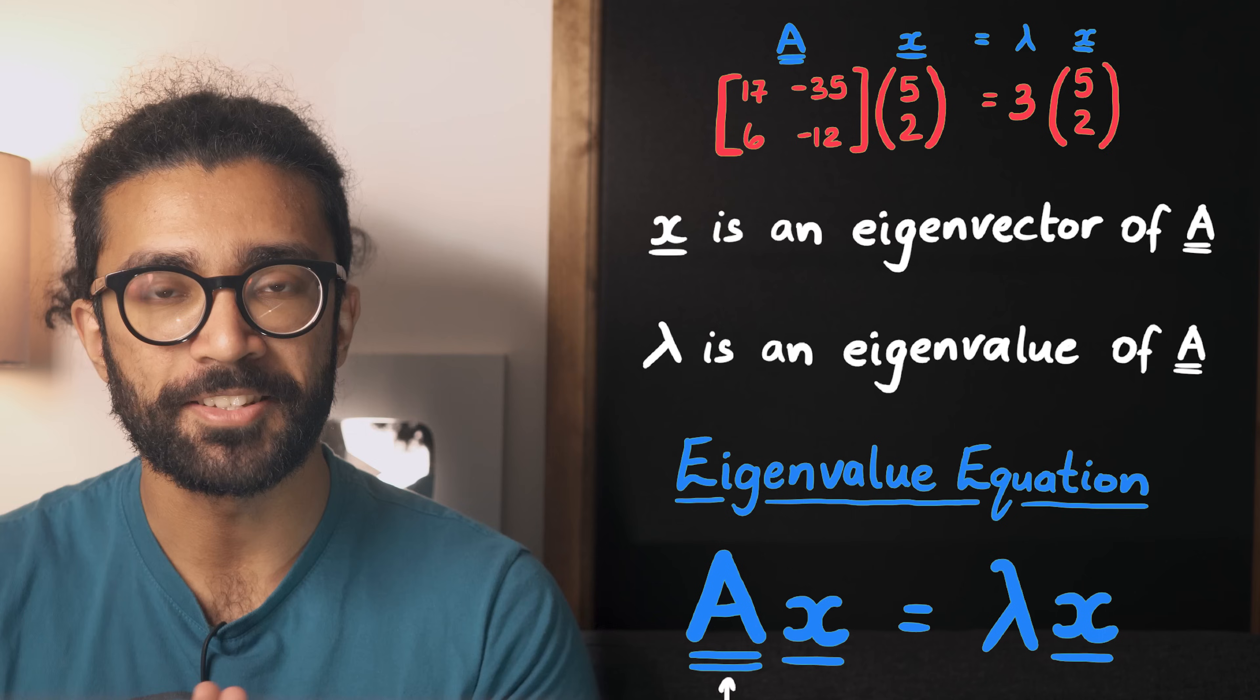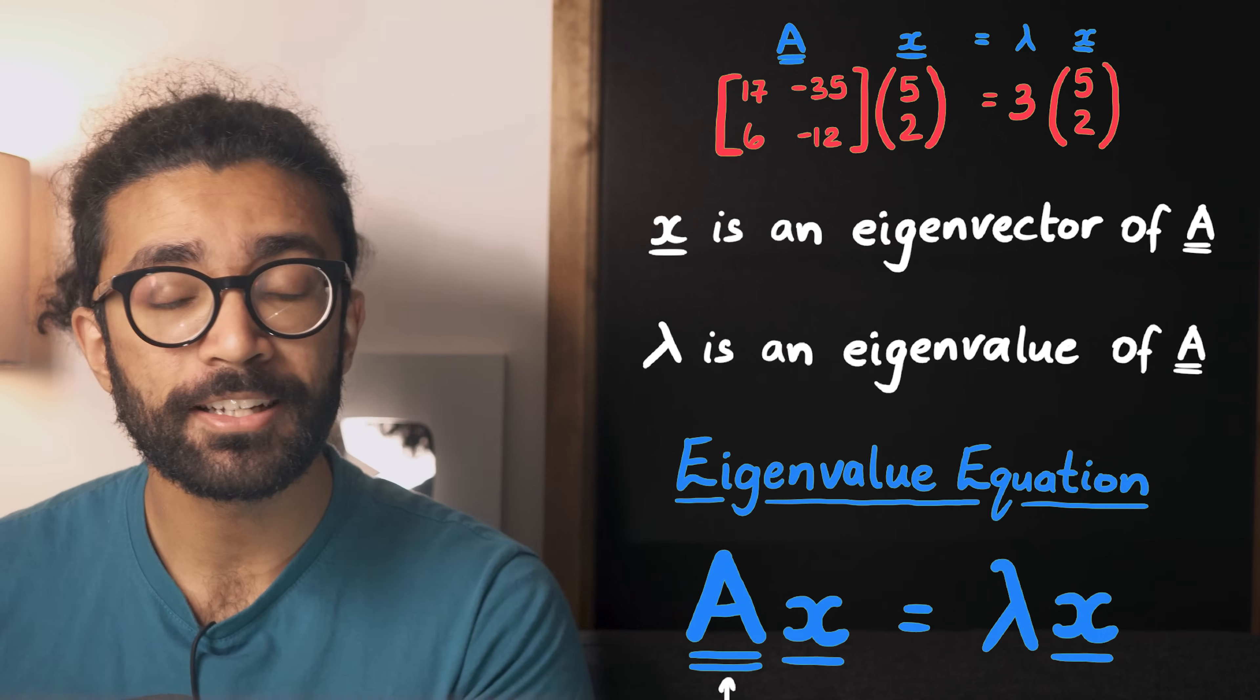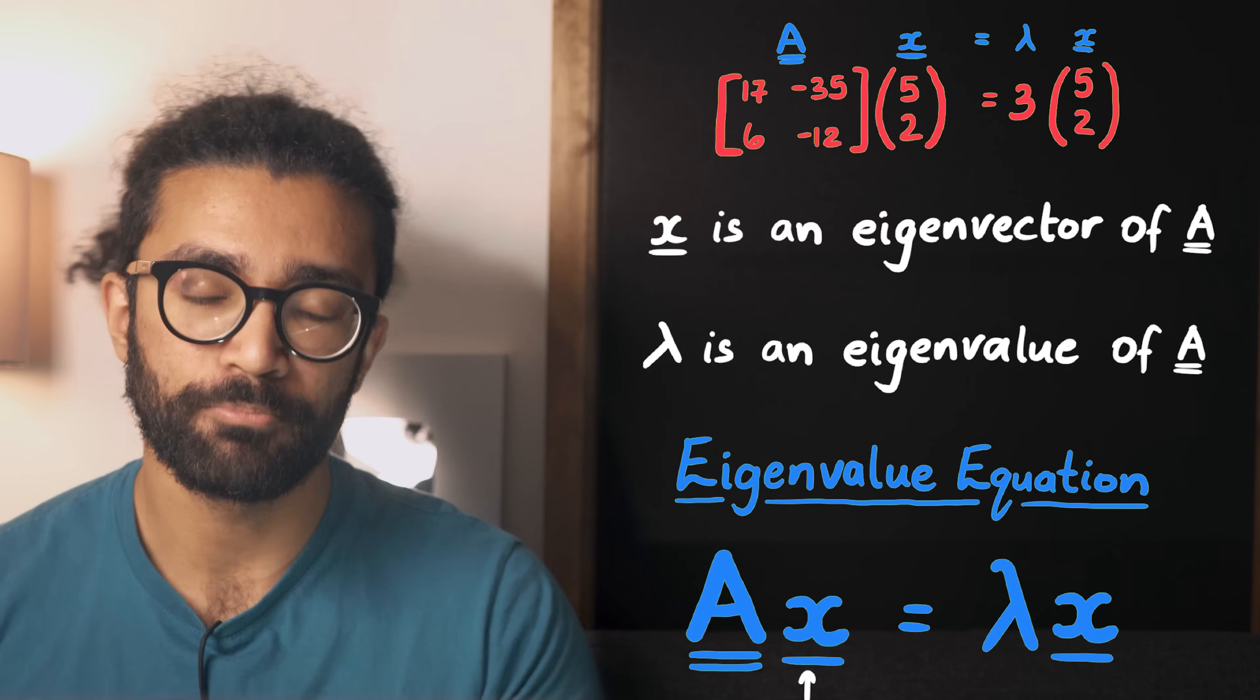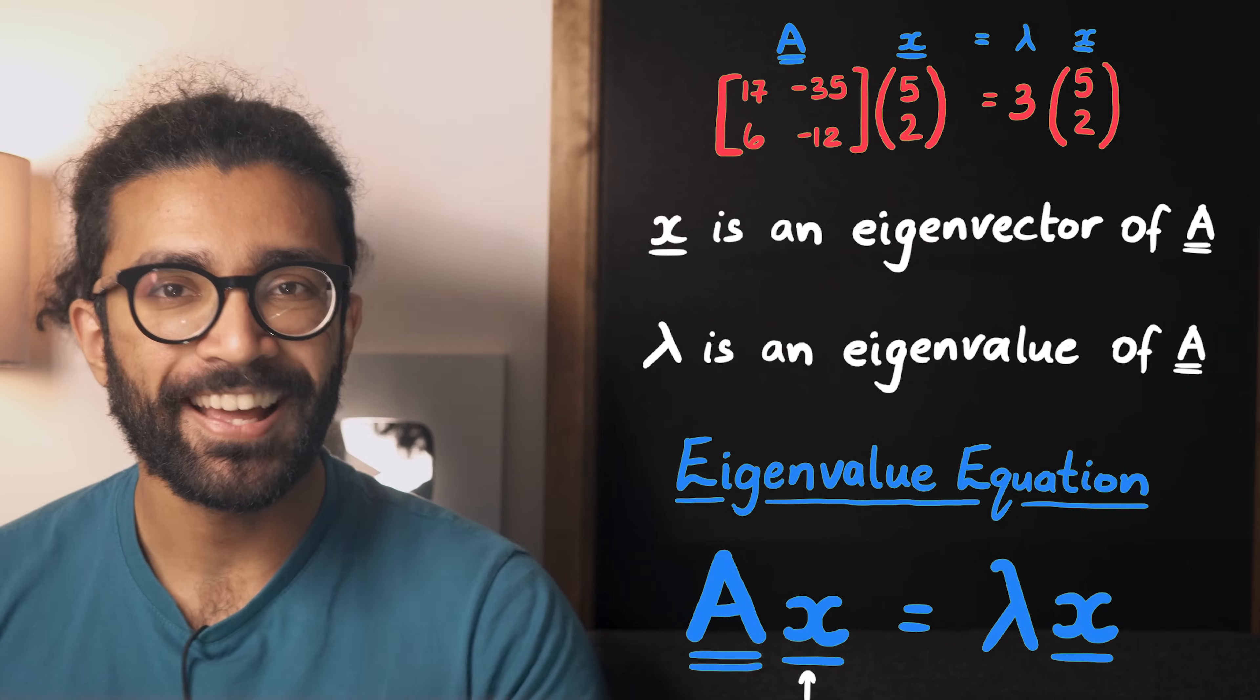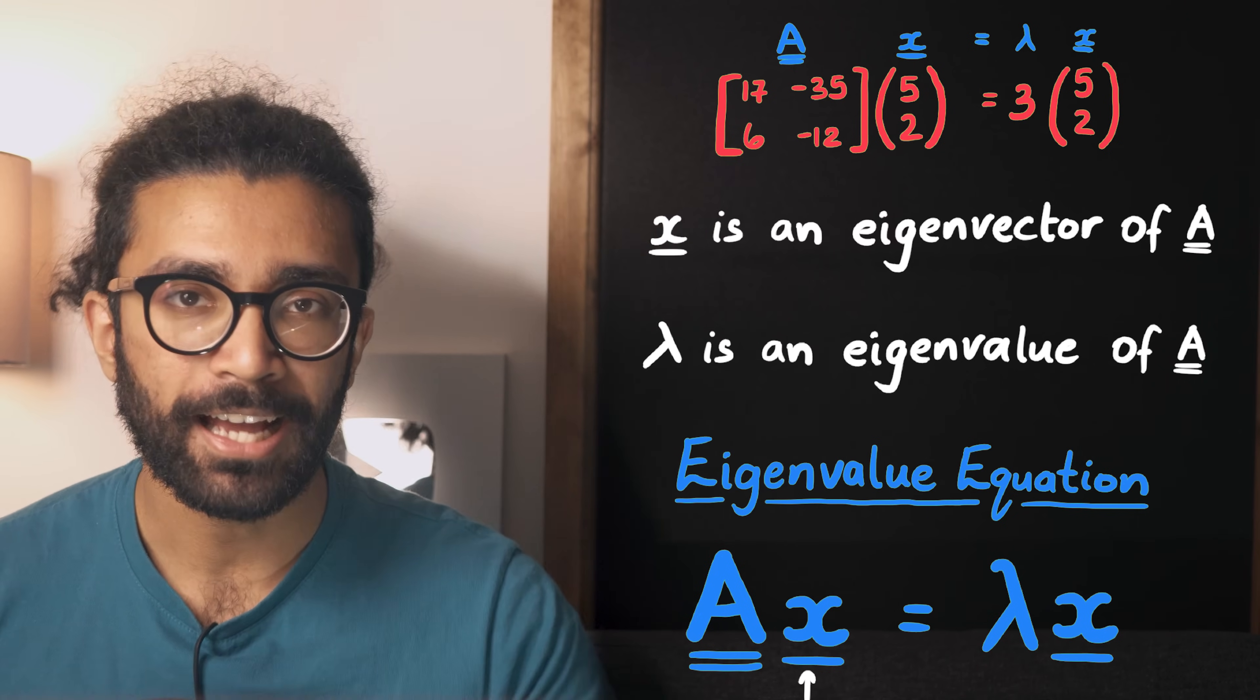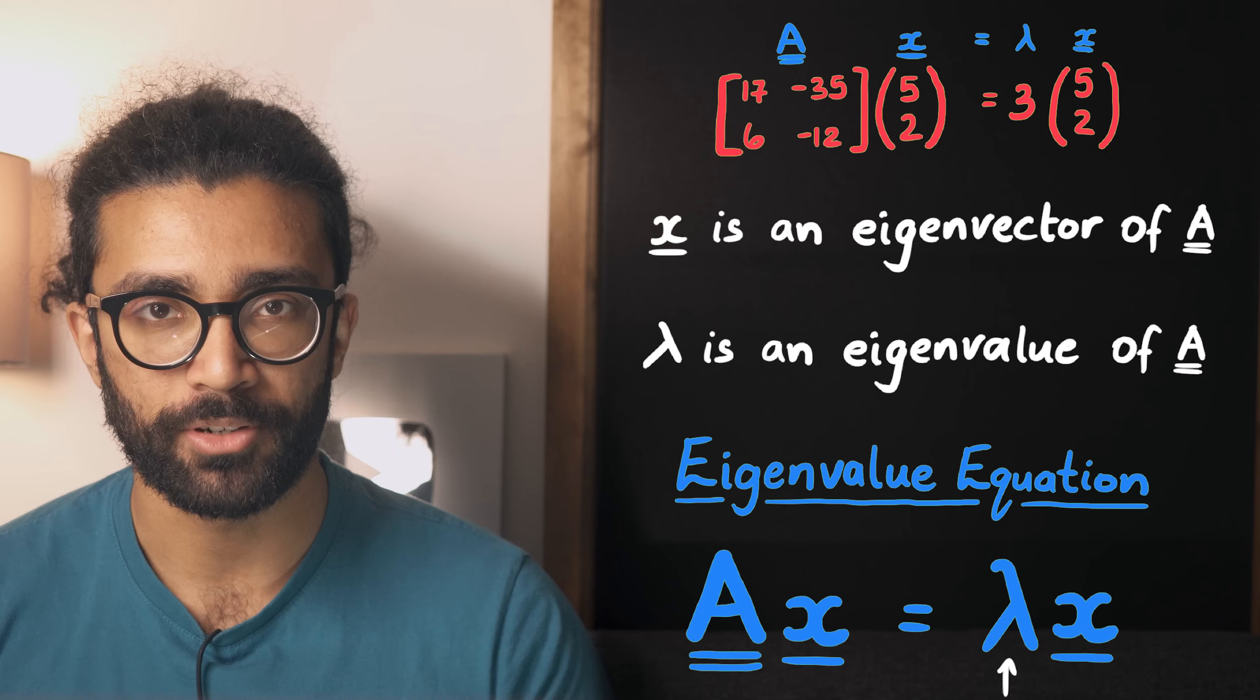For a given matrix, in some cases, we can find a specific vector that does not get transformed to another vector pointing in another direction. In that case, our eigenvalue equation applies, and we found an eigenvector and an eigenvalue for a particular matrix.